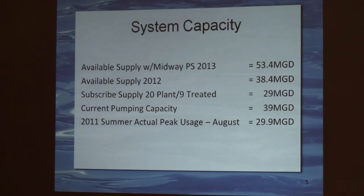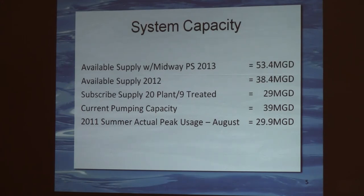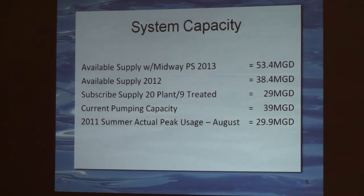This is just a sheet on our capacity — what we have available. Currently we have 38.4 million gallons available to us. In the near future with the Midway pump station, which has been constructed, we'll go to 53 million gallons. Our subscription with the plant — the untreated water and the treated water — currently stands at 29 million gallons. As of this summer, we reached 29.9 million gallons, which drew down from storage — elevated tanks, ground storage, et cetera.